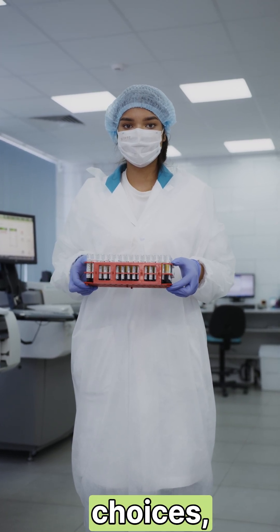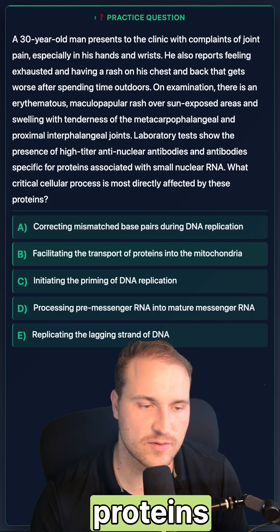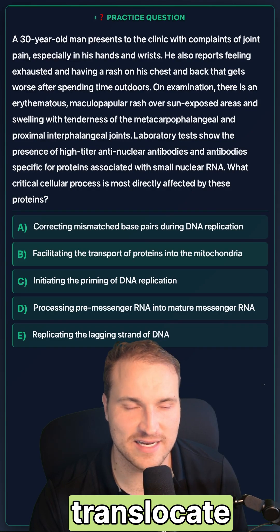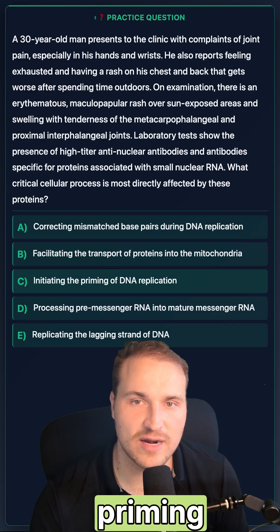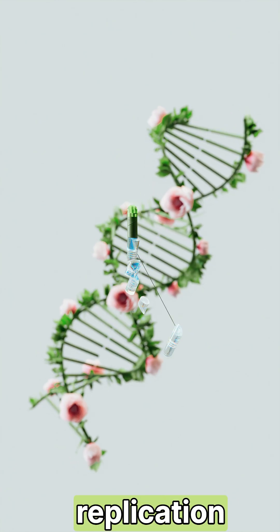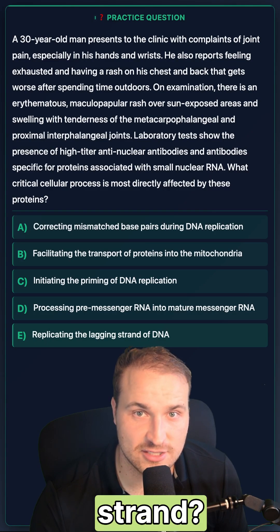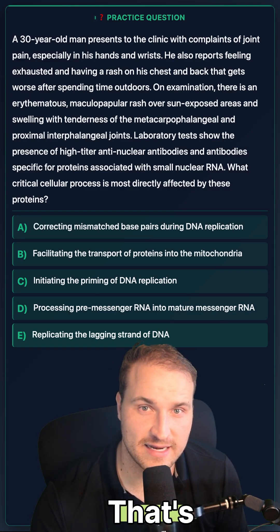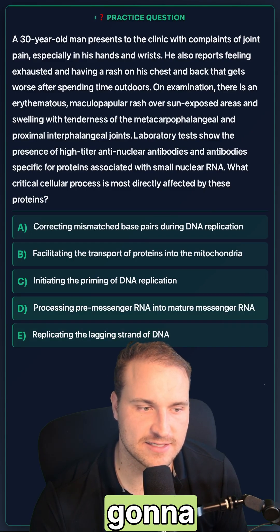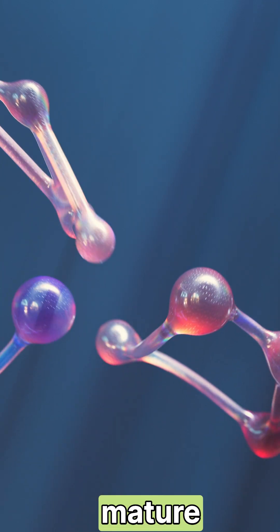Looking at our answer choices: correcting mismatch base pairs would be like Lynch syndrome. Facilitating transporter proteins in mitochondria would be like the TOM or TIM complexes — that translocates stuff, not relevant. Initiating the priming of DNA replication — well, that's like DNA primase, so that's a replication process, not RNA processing. How about replicating the lagging strand? Well, that's the Okazaki fragments — DNA replication specific, not SNRNPs. So the answer is going to be D: processing pre-messenger RNA into mature messenger RNA.